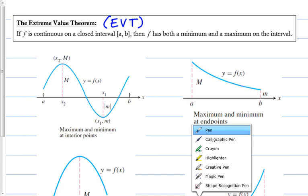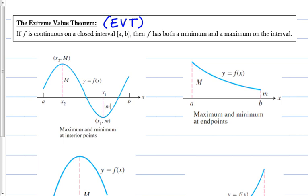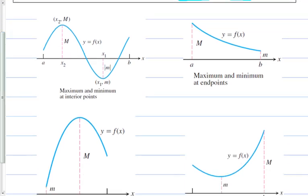This theorem says if you have a function that is continuous — that's one requirement — on an interval that is closed — that's another requirement — then automatically f will have a minimum and a maximum on that interval. The pictures are basically examples of mins and maxes on a closed interval. The first one shows a minimum and a maximum on a continuous function over a closed interval from a to b. The second picture also shows a maximum and minimum, which happen to be at the endpoints.